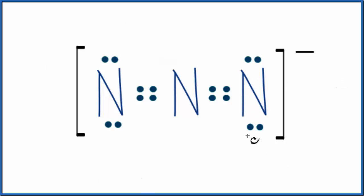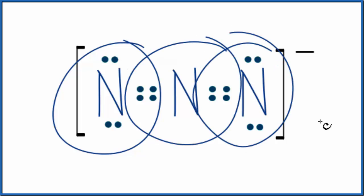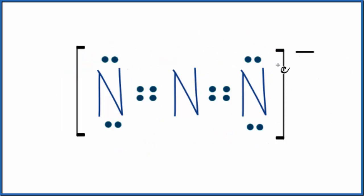So we have our Lewis structure. Each nitrogen has eight valence electrons, so it's all good. Overall, we have a negative charge. This is an ion.